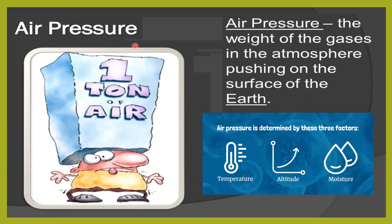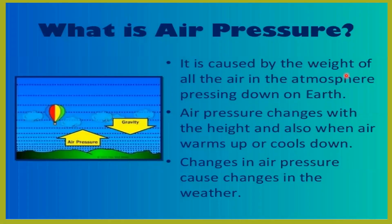Now let us see what is air pressure. Air pressure is the weight of gases in the atmosphere pushing on the surface of the earth. Air pressure is determined by three factors: temperature, altitude, and moisture — the amount of water vapor in the atmosphere, also called humidity. Air pressure is caused by the weight of all the air in the atmosphere pressing down on the earth because of the gravitational pull of the earth.